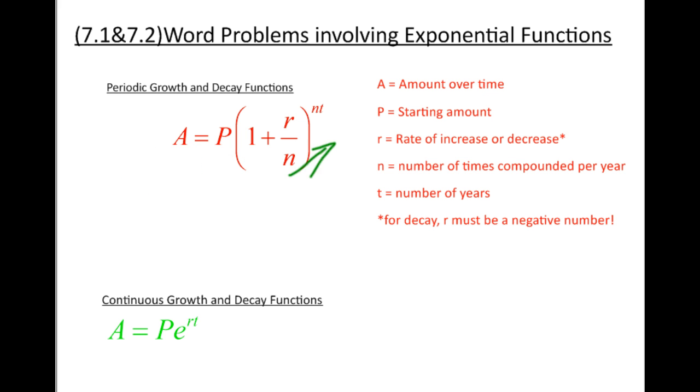The A stands for the amount that you're going to have over time. The P stands for the starting amount. This P actually stands for a word and that word is principle. But principle just means your starting amount. Now, your r in the equation stands for your percent of increase or decrease. We always need to change that percent to a decimal. Also notice if it's a decrease for decay, you must use a negative number for r.